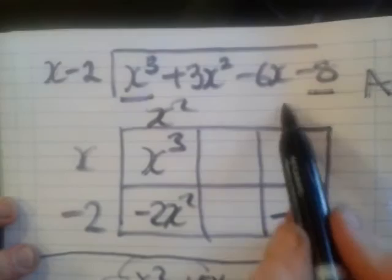Now, I think what we'll do is we'll say x divides an x cubed x squared times. Now we're coming down along the box, minus 2 by x squared is minus 2x squared.